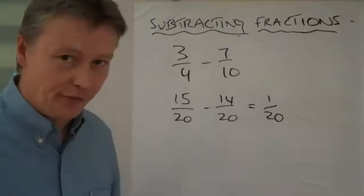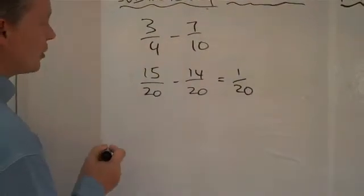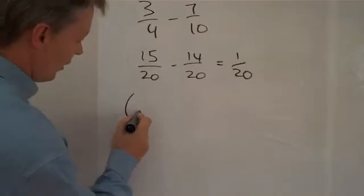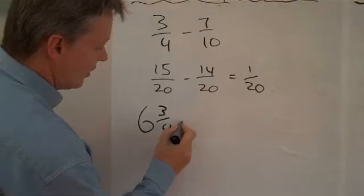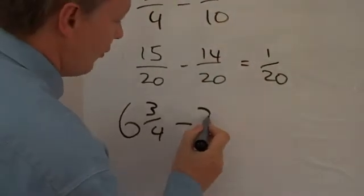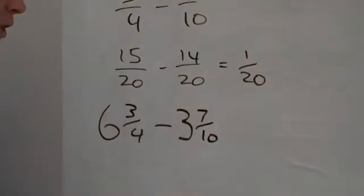Okay, so let's just make it a little bit more difficult by adding whole numbers as well. So exactly the same question, but this time I'm going to write it with six whole ones and three quarters, take away three whole ones and seven tenths.